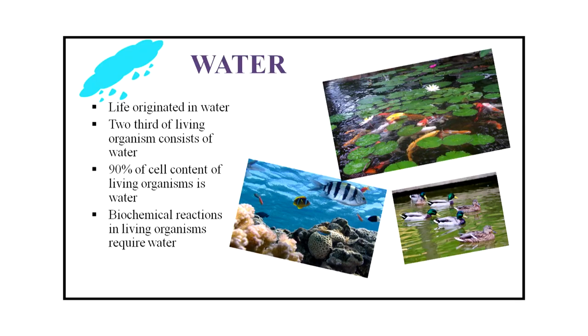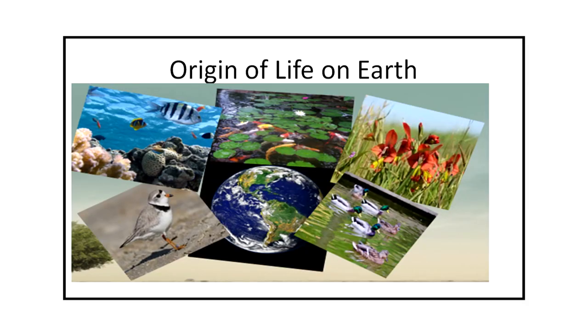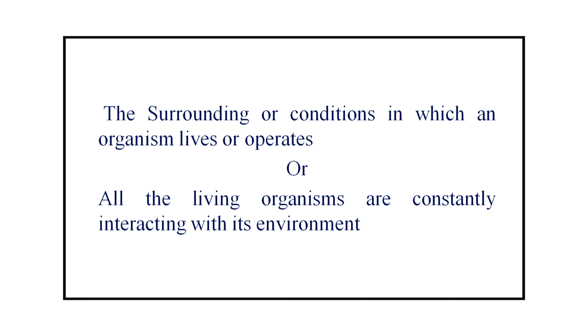It is impossible to survive without water. Water not only helps to regulate body temperature, but the majority of biochemical reactions in our body take place in the presence of water. Water is also a home for many plants and animals. Temperature is a very important factor of the environment, as all living organisms can tolerate only a certain range of temperature. Thus there is a very delicate balance between the biotic and abiotic components of the environment. The environment may be defined as the surroundings or conditions in which an organism lives or operates.